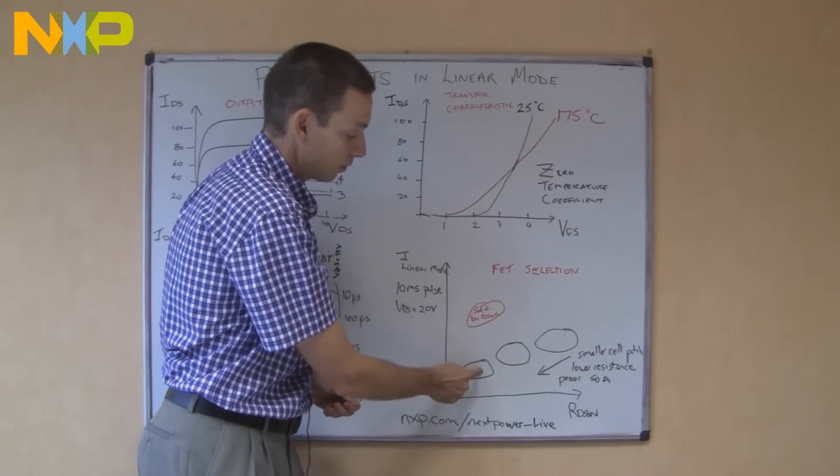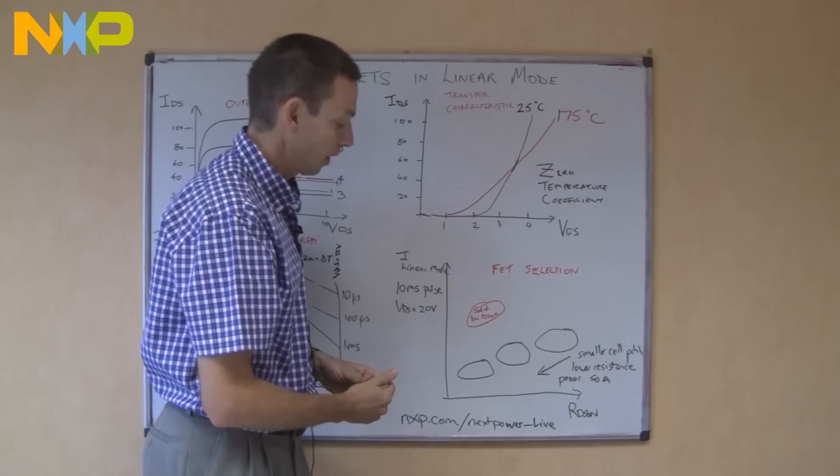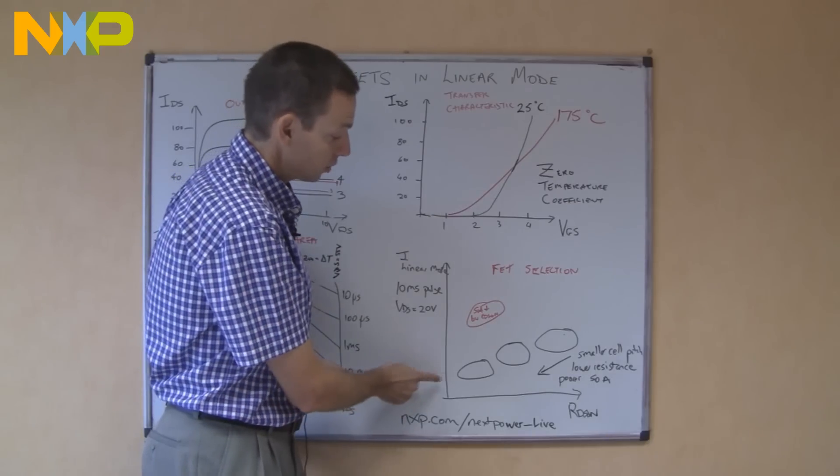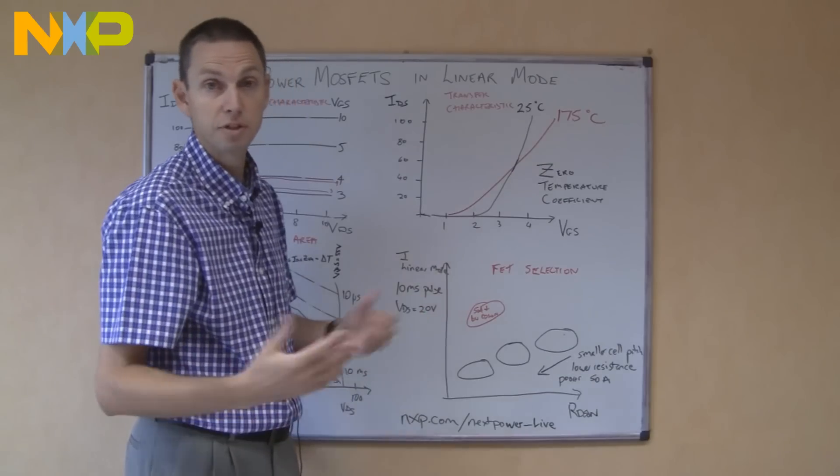So most MOSFETs now have been optimized for very low resistance, it's a good small piece of silicon, low power dissipation in the on state, but they do have poor linear mode operation. That's a compromise that's been made.